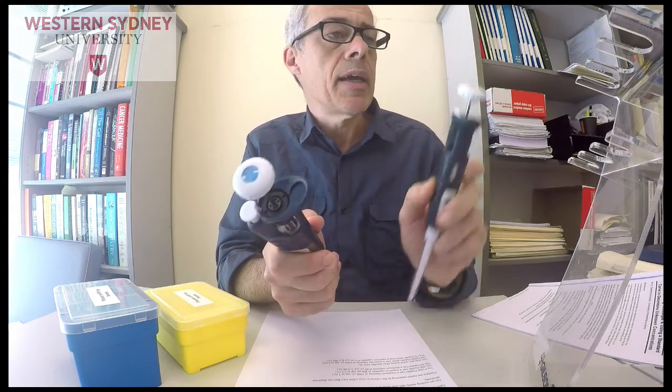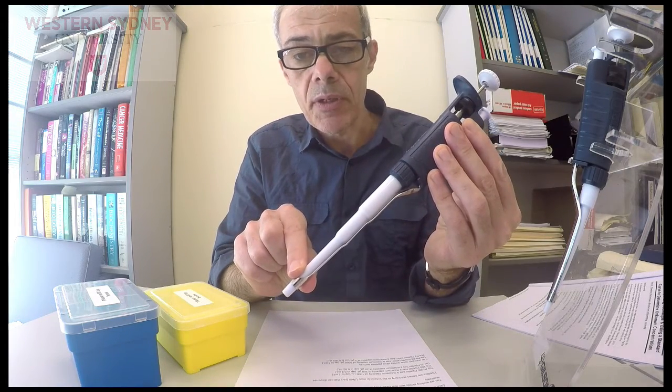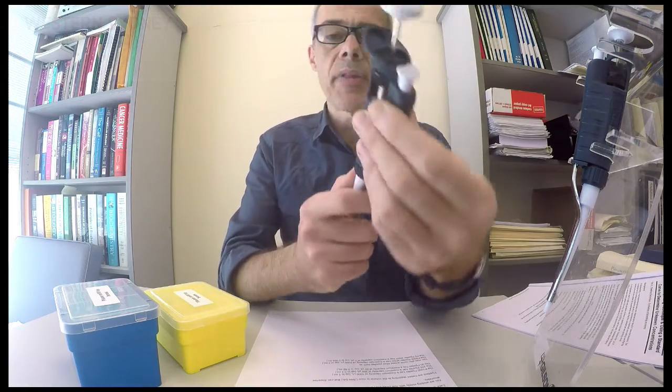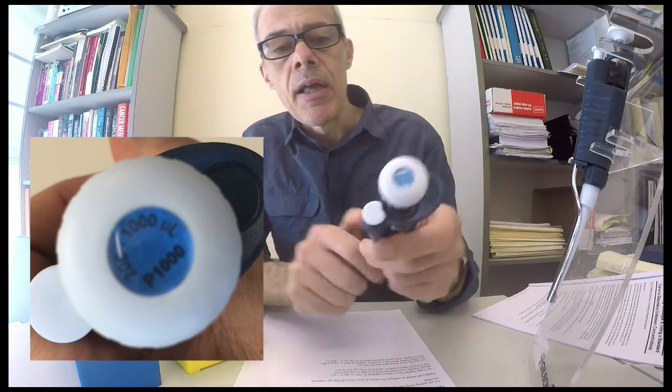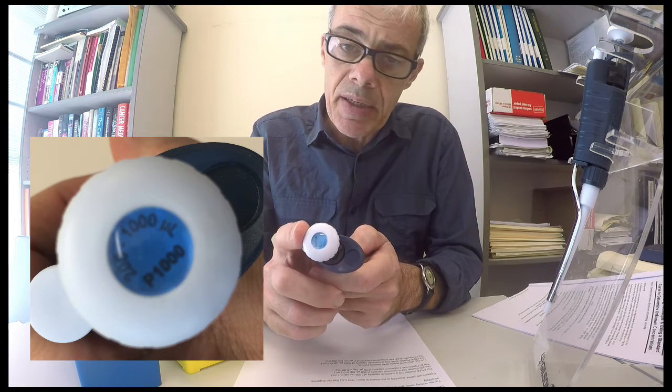Now if we look at one of these pipettes here, this is a P1000, a pipette 1000, and I call it a P1000 because on the little cap here it says P1000. That refers to the maximum volume that you can dispense with this pipette.